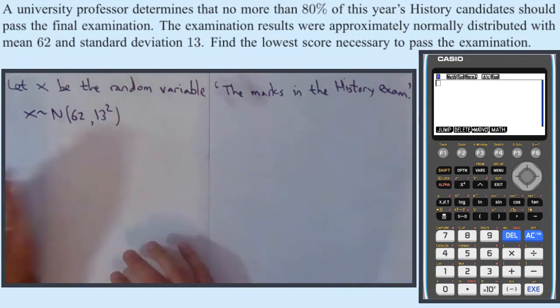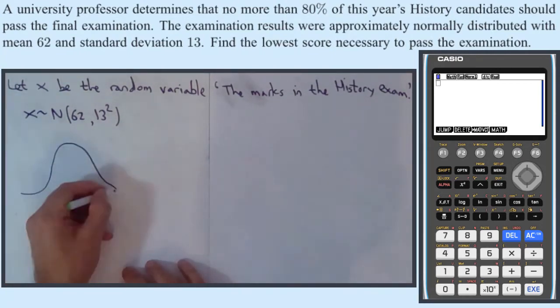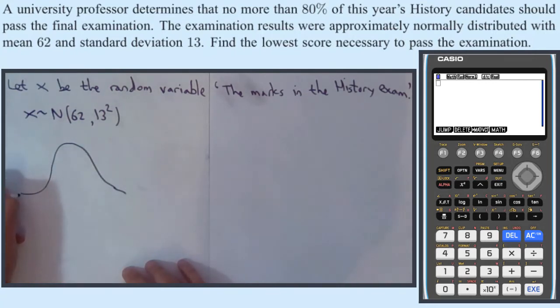Right so we are looking for a k such that only 80% or less pass. So if we draw this I think this is a real argument for drawing it, because without drawing this picture you might make a tail error as in get left when you need right or right when you need left.